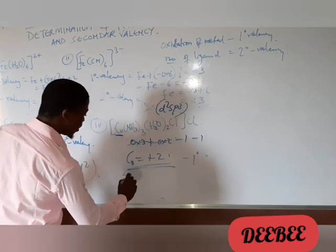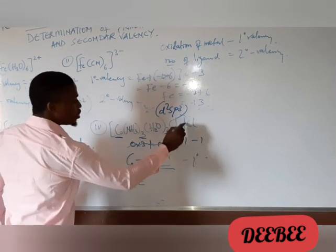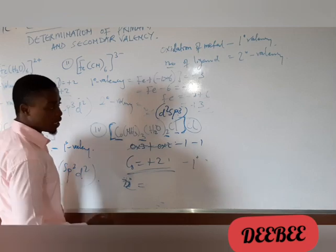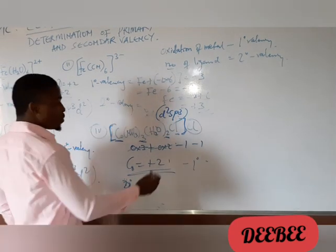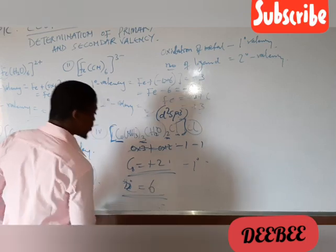And the secondary valence. That would be, we have ethylamine, 2 oxygens, and 1 chlorine. The chlorine outside is not inside the coordination sphere. So we don't consider that as a ligand. Rather, it is an anion. So basically, we have ethylamine 2 more. So we have 6 as the coordination number.